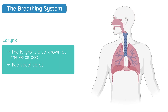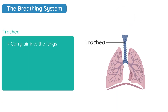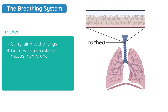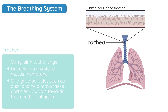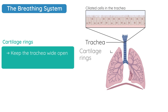The main windpipe is better known as the trachea and its job is to carry air down into the lungs. The trachea is lined with a moistened mucous membrane, which means any micro particles such as dust will get trapped on it. There are tiny hair-like structures called cilia which grab those particles and move them back up toward the mouth, throat, or pharynx — back toward the outside world. The trachea needs to be kept open at all times, and that's what the rings of cartilage do — they keep the trachea wide open so that airflow is constant in and out of the lungs.